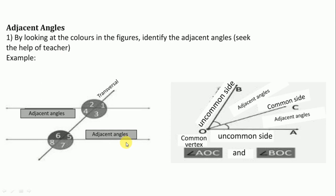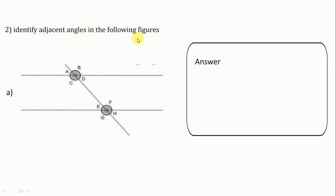Let's move to the next one: Adjacent angles. Here this figure is showing the adjacent angle. For adjacent angles we have to see the common side of both angles and the common vertex. Those angles having a common side and common vertex we call adjacent angles. See here AB has a common side, so we write AB are adjacent.